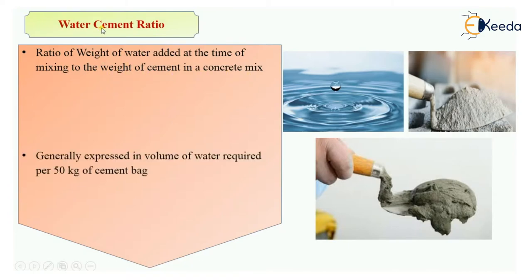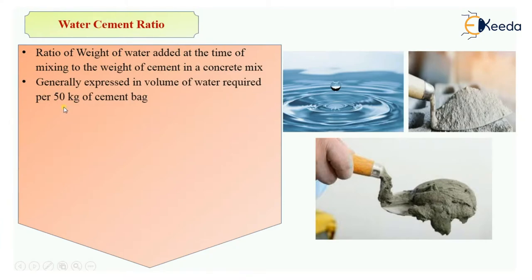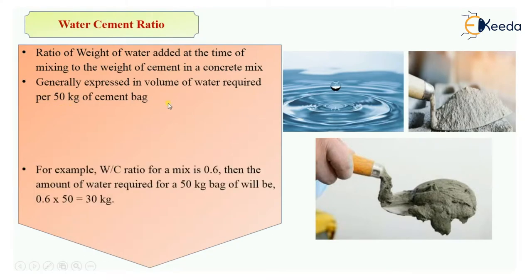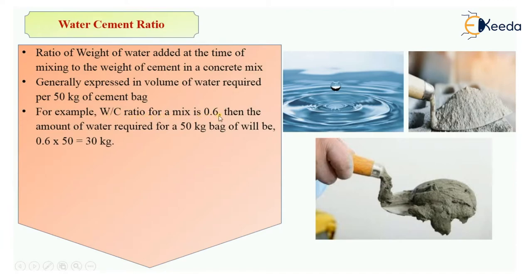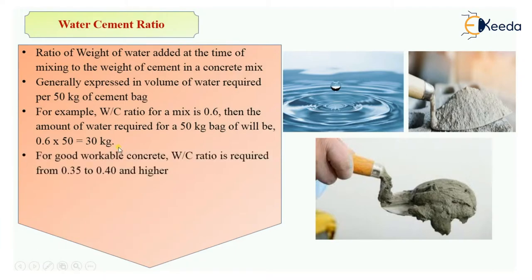It is generally expressed as the volume of water required per 50 kg bag of cement. For example, if the water-cement ratio for a mix is 0.6, then the volume of water required for a 50 kg bag of cement will be 0.6 × 50 = 30 kg.